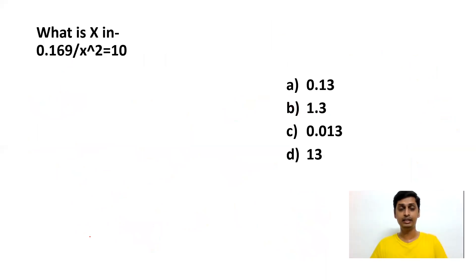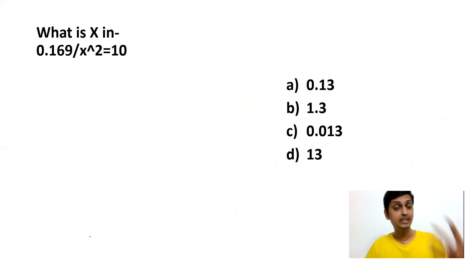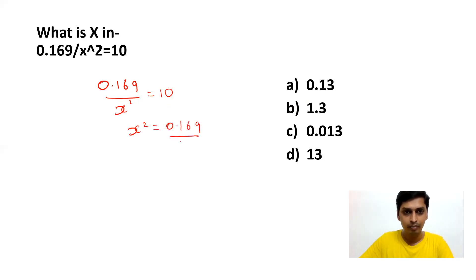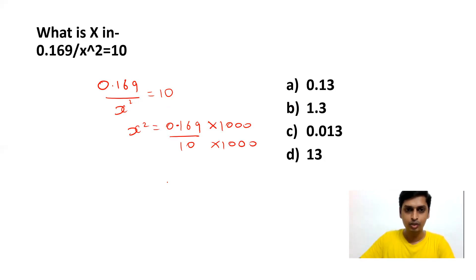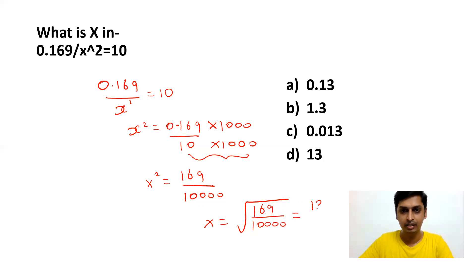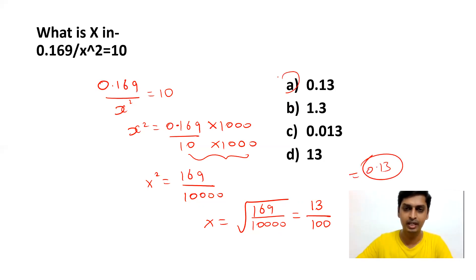Moving to the next question: What is x in √(0.169 / x²) = 10? This is based on surds and indices — very popular questions where you can easily score marks. Rewrite as x² = 0.169 / 10. To remove the decimal, multiply numerator and denominator by 1000: x = √(169/10000) = 13/100 = 0.13. So x = 0.13.